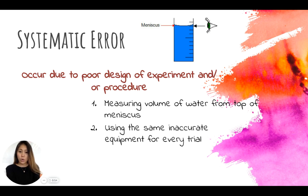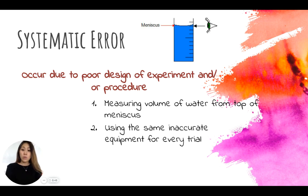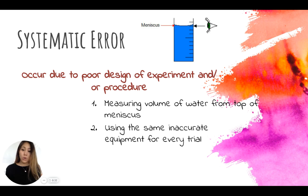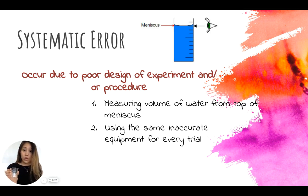Using the same inaccurate equipment for every trial also creates systematic error. For example, when looking at different uncertainties, the most inaccurate way to measure 25 milliliters of distilled water would be using a beaker compared to a volumetric pipette. If you use the same inaccurate equipment like the beaker every trial, that creates an error that is systematic.